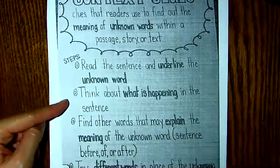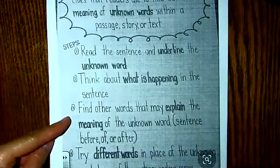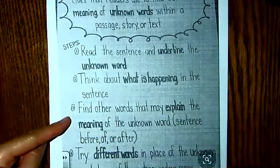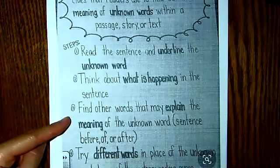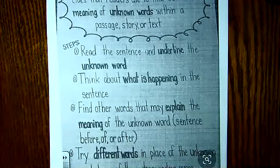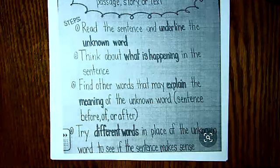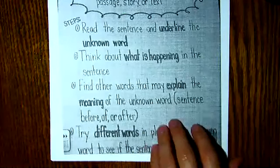Think about what is happening in the sentence. Find other words that may explain the meaning of the unknown word, which could be the sentence before, some of the words in the sentence, or after the unknown word. You could also try different words in place of that unknown word to see if it still makes sense. Those are a few skills that we're going to use on this cold read.